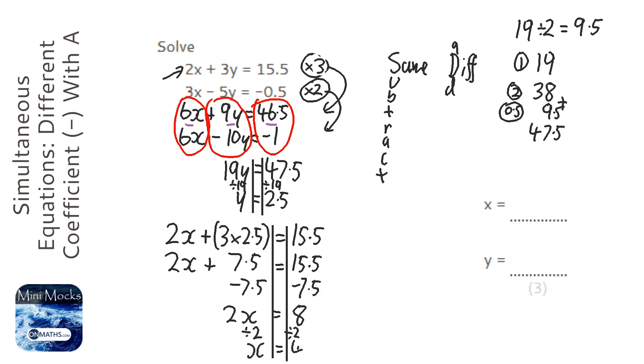So x equals 4 and y equals 2.5. And you can check that in the second equation if you dare. So 3 times 4 is 12, take away 12.5 which is minus 0.5. So we know it's correct.